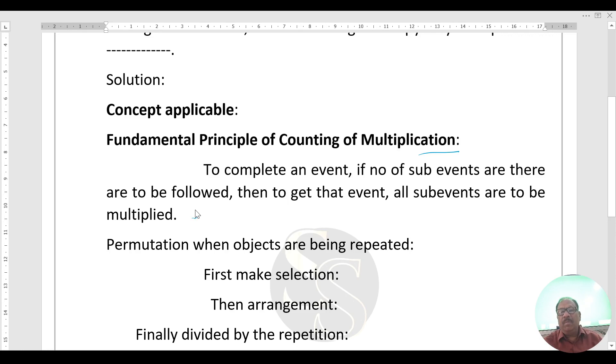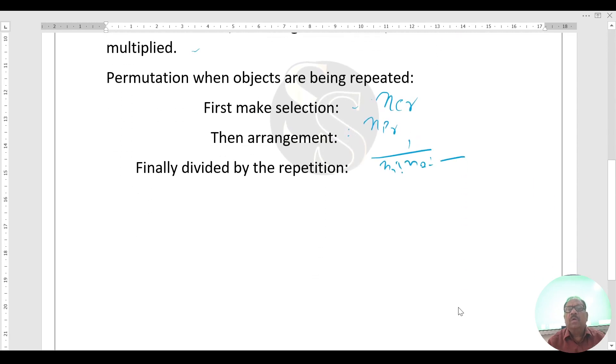Second concept applicable is Permutation when objects are being repeated. First make selection, selection is nCr. Then arrangement is nPr. Finally divide by the repetition: n1 factorial, n2 factorial like this. Now I will clear this concept using the question.